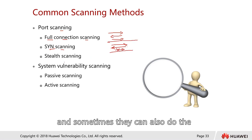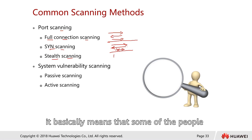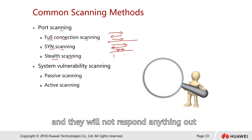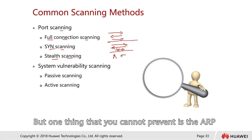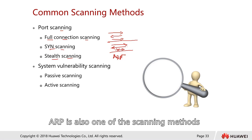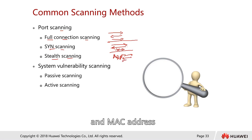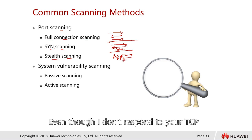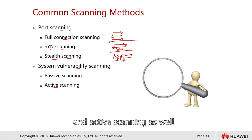There is also stealth scanning, where some machines try to hide and not respond. However, one thing that cannot easily be prevented is ARP. You can query whether an IP responds with ARP, revealing its IP and MAC address. Even if you don't respond to TCP, ARP responses still reveal that you are alive. There is also passive and active system vulnerability scanning.